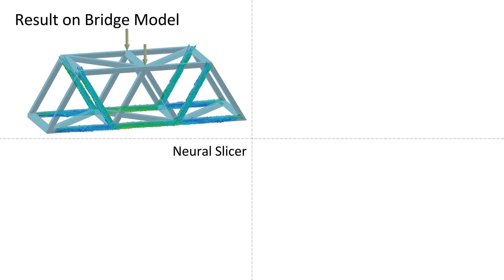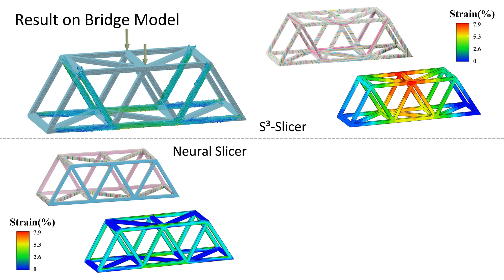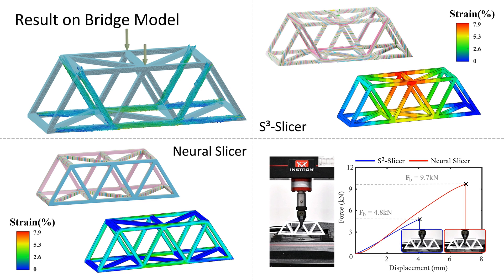The comparison between our neural slicer and the S-cubic slicer is conducted on the bridge model with the requirement of strength reinforcement. Both slicers can successfully generate curved layers. Finite element analysis with anisotropic material properties is conducted to compare the strain distributions. In the three-point bending test, the result generated by our neural slicer gives a breaking force that is doubled.